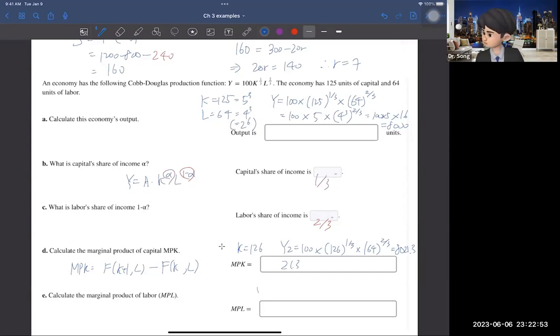Likewise, you can find the marginal product of labor. So, let's say the Y3, is 100 times 125. So, I don't touch the capital, 125. But then, for the labor, now you have 65. So, one more worker. And then, calculate this one.